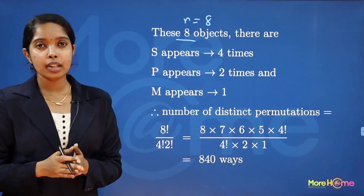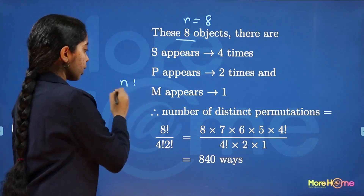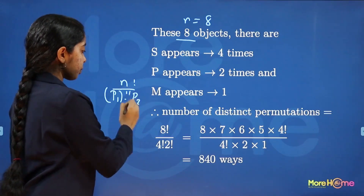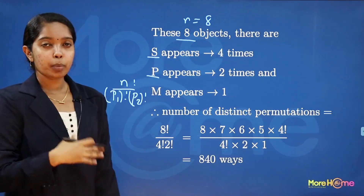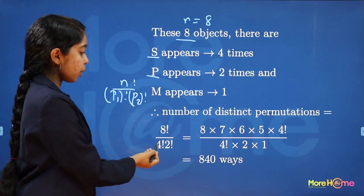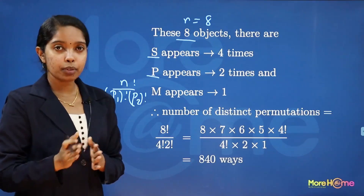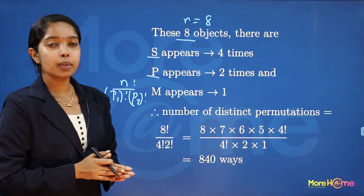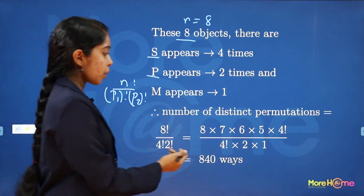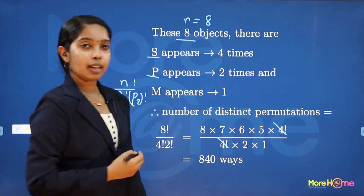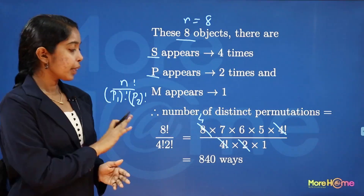Using the distinct permutation formula for 8 objects where S appears 4 times and P appears 2 times, the number of arrangements is 8 factorial divided by 4 factorial into 2 factorial. Expanding: 8 into 7 into 6 into 5 into 4 factorial divided by 4 factorial into 2 factorial. The 4 factorials cancel and 8 divided by 2 gives 4, leaving the product equal to 840.